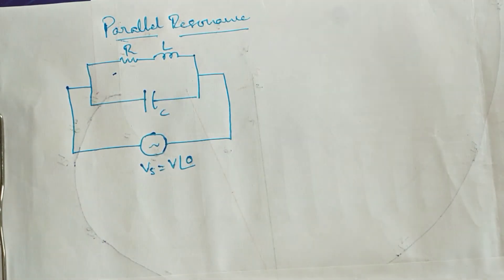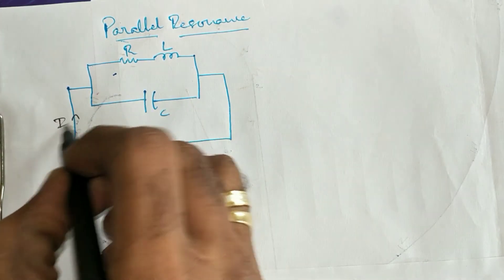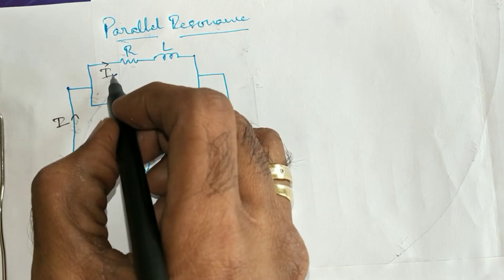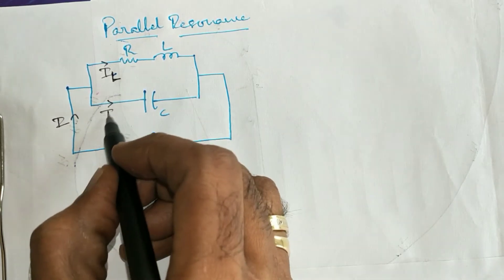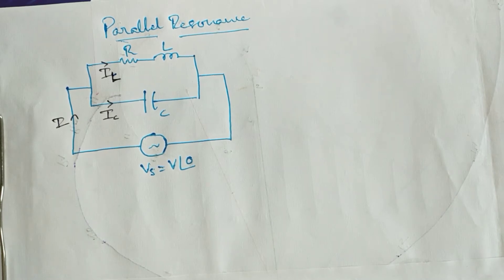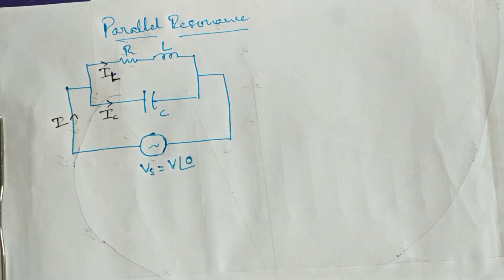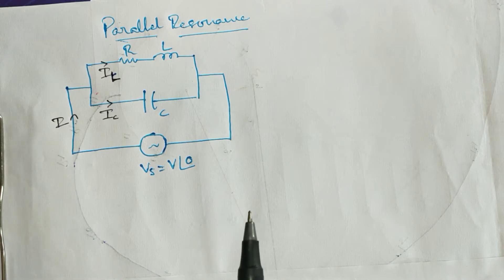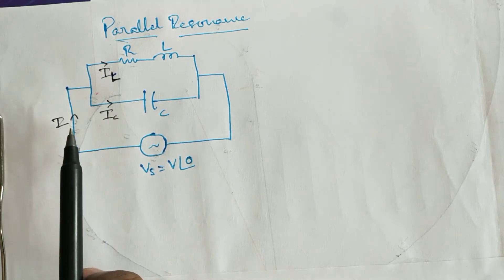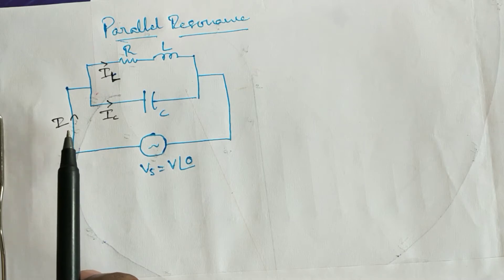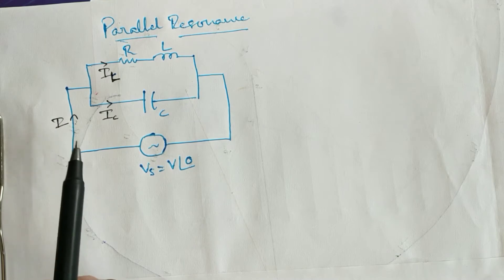I am going to consider the currents as shown: the total current as I, the current passing through the RL branch as I_L, and the current passing through the capacitor as I_C. The concept of resonance remains the same whether series or parallel — ultimately the power factor should be unity, or the circuit has to behave like a pure resistive circuit. In the case of parallel resonance, the reactive component of the current has to become equal to zero, meaning the total current I should have only the active component. That condition is said to be the parallel resonance condition.